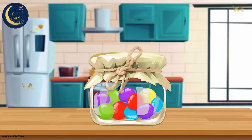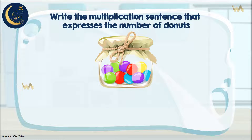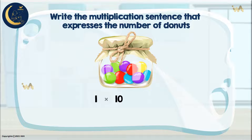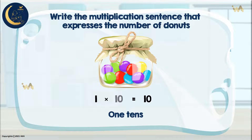Here, we want to write the multiplication sentence that expresses the number of pieces of candy. We write the number of sets multiplied by the number of items in one set. How many sets do we have? One. How many items? Ten. So we have one multiplied by ten, which equals ten — we have ten candies. It can also be read as one-tenth. One multiplied by ten equals ten.